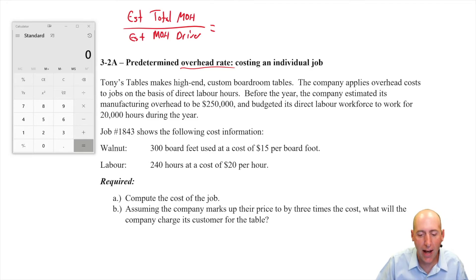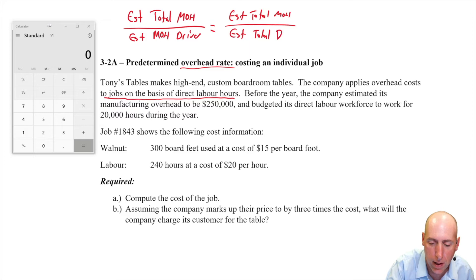Tony's Tables makes high-end custom boardroom tables. The company applies overhead costs to jobs on the basis - and you're always looking for this phrase - applies overhead costs to jobs on the basis of something. So we know it's going to be estimated total MOH divided by, it applies on the basis of direct labor hours. So it's going to be estimated total direct labor hours for this company. We can have machine hours or direct labor costs. Those are probably the three most common that you see.